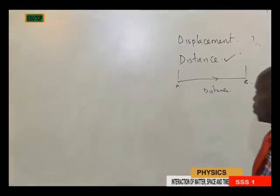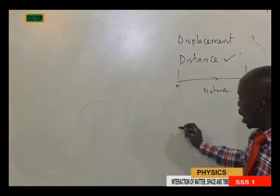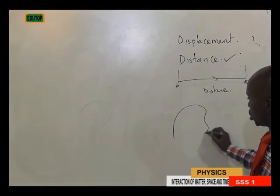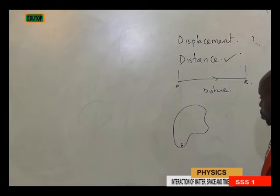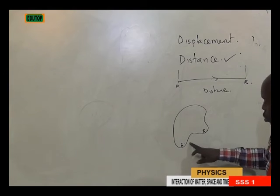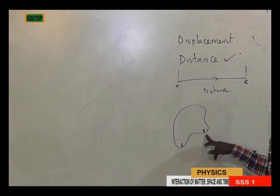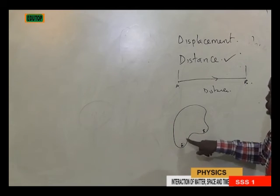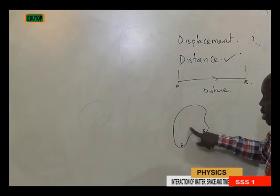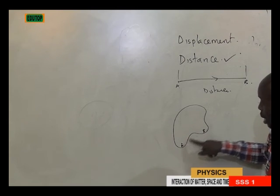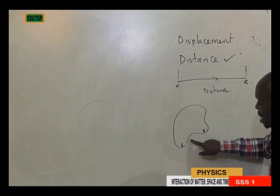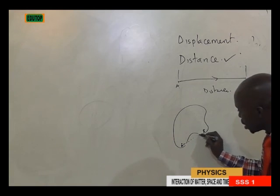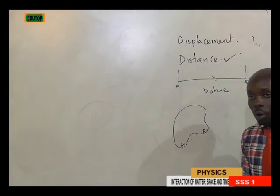Displacement is a vector measure of the interval between two locations, measured along the shortest path connecting them. For example, in a room, point A is here and point B is there. You can't pass through the wall to reach B, so measuring the actual distance along the structure of the room is what we call distance. Displacement, on the other hand, is the shortest distance between A and B, irrespective of the wall.